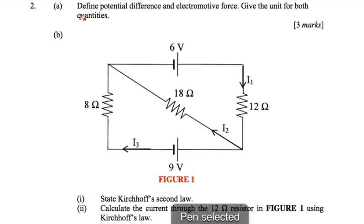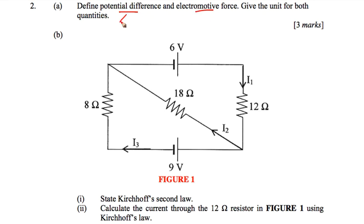Hello. Number 2A: define potential difference and electromagnetic force. The potential difference is delta V, and electromagnetic force is EMF. What is the difference between the two, and what is the unit for each quantity?